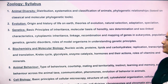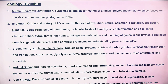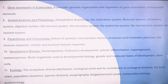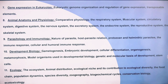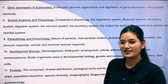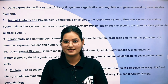The 11 sections are: first, animal diversity; second, evolution; third, genetics; fourth, biochemistry and molecular biology; fifth, animal behavior; sixth, cell biology; seventh, gene expression in eukaryotes; eighth, animal anatomy and physiology; ninth, parasitology and immunology; tenth, developmental biology; and eleventh, ecology. So these are your total 11 sections.